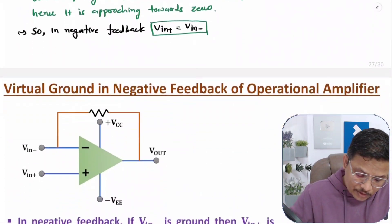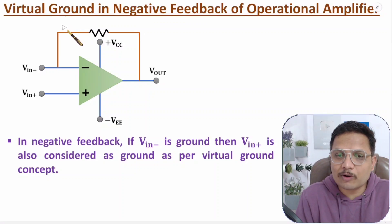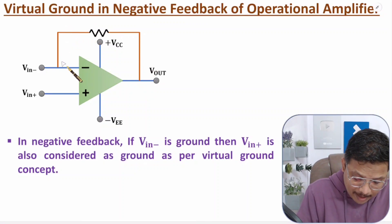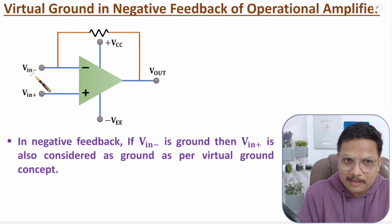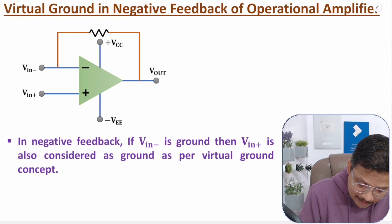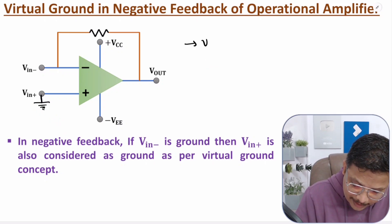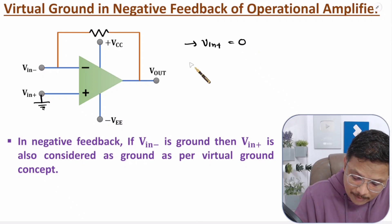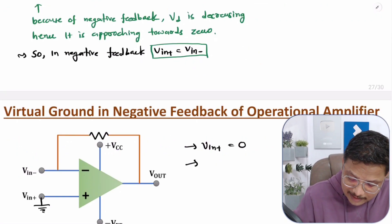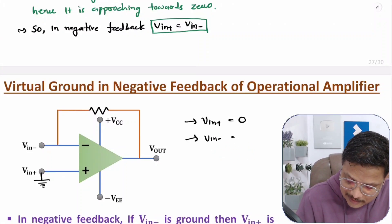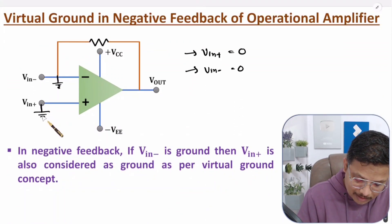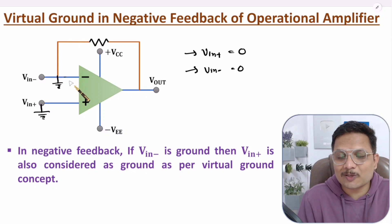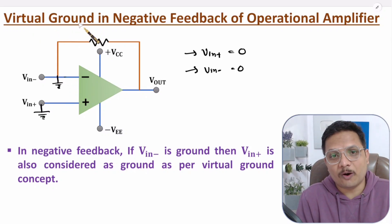Now, what is the virtual ground concept? In negative feedback, if you keep V in plus grounded, then V in minus is also getting grounded. If we connect the positive terminal to ground, we are providing V in plus equal to zero. As per virtual short concept, V in plus equals V in minus, so V in minus is also getting zero — it is also getting grounded. If you ground the positive terminal, then the negative input terminal is also getting grounded. That is the virtual ground concept of operational amplifiers.